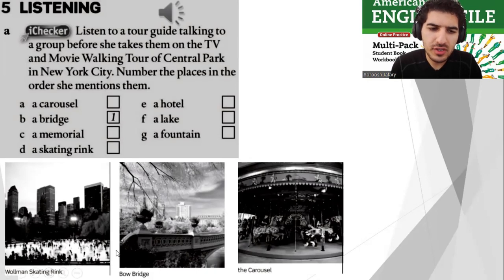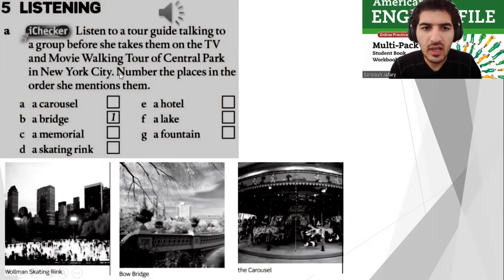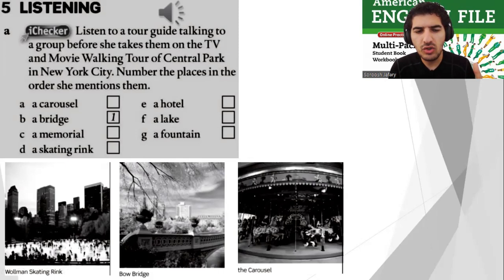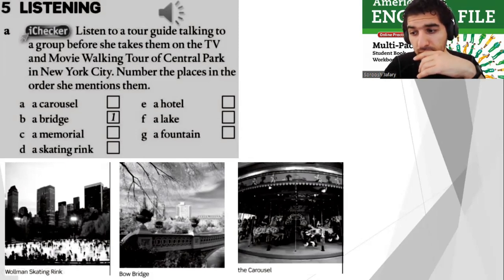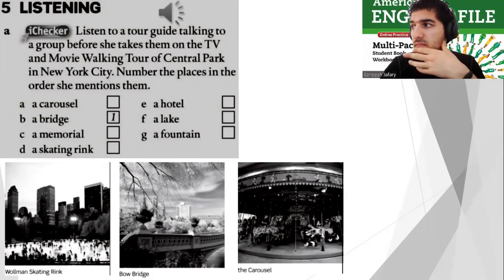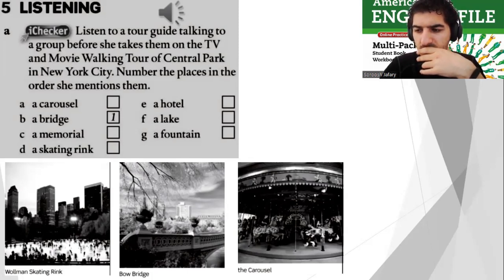And as always, the last section — listening. First look at the pictures. These are some famous locations. Listen to a tour guide talking to a group before she takes them on the TV and movie walking tour of Central Park in New York City. Number the places in the order she mentions them. File 6A listening. Hello and welcome to the TV and movie walking tour of Central Park. My name's Stacy Clinton and I'll be your guide today. Wear comfortable shoes because the tour lasts for two hours. We'll end at Columbus Circle at around two o'clock. We're going to start at Gapstow Bridge, a stone bridge originally built in 1874.